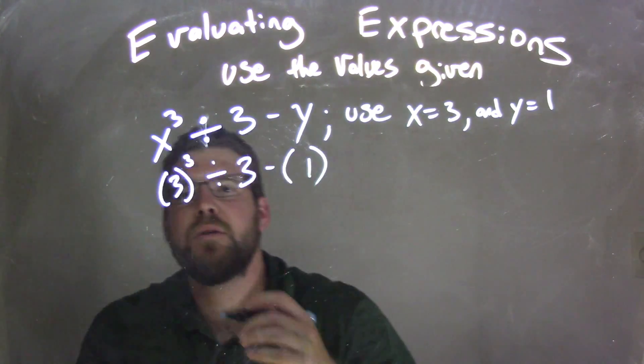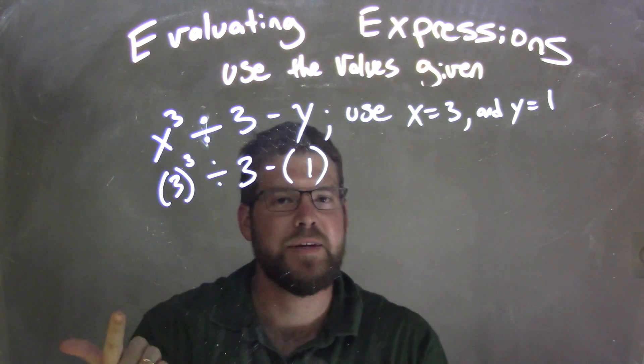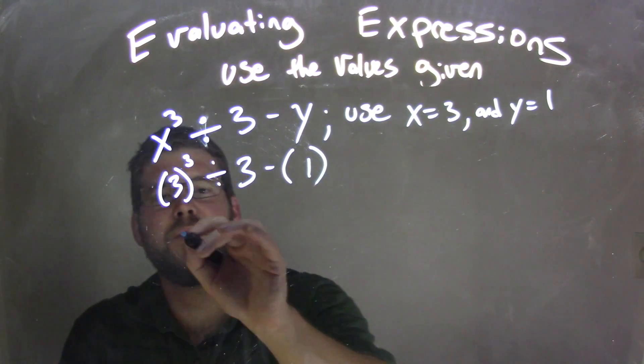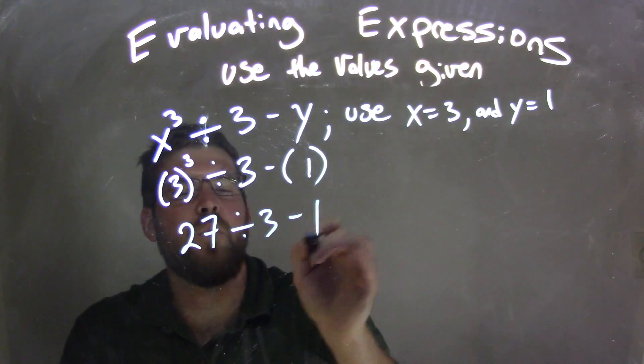Well, 3 to the third power is 27, right? 3 times 3 is 9, times another 3 is 27, divided by 3 minus 1.